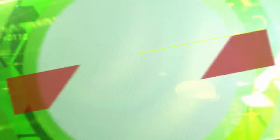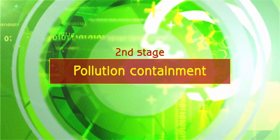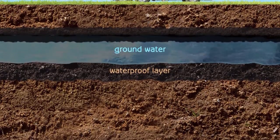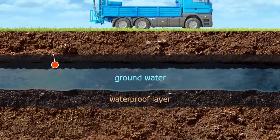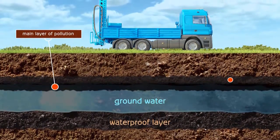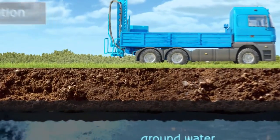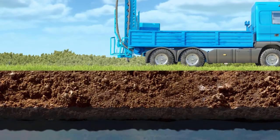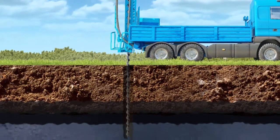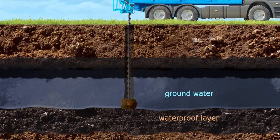The second stage is pollution containment. A filtration-proof wall is constructed along the perimeter of the pollution area. The wall is made by injecting modified clay slurry via well points, all the way down to the waterproof layer.